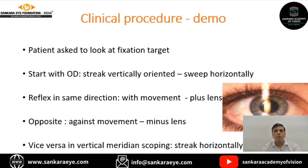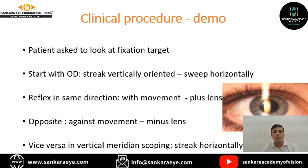To summarize: the patient looks at the fixation target, starting with the right eye. The streak is vertically oriented and you always start with the horizontal meridian first. A with movement means the reflex moves in the same direction as the streak sweep — neutralize with a plus lens. In this example, the examiner started at plus 1.25 and found neutralization at plus 2.75 diopters, with plus 3 diopters showing a slight against movement.